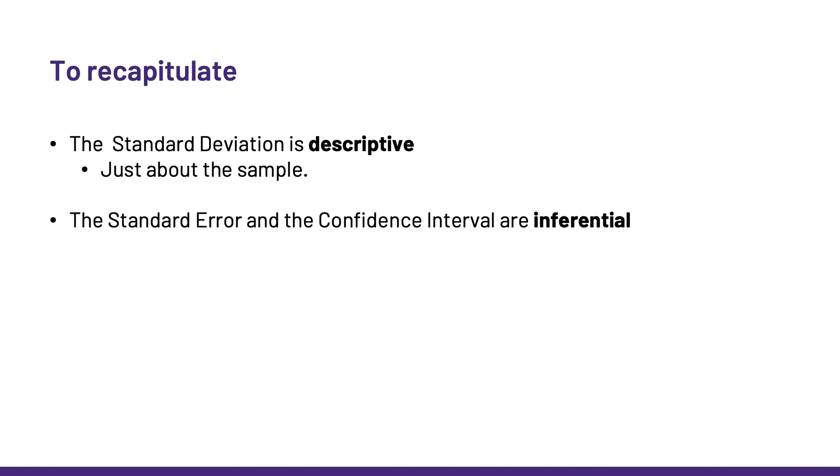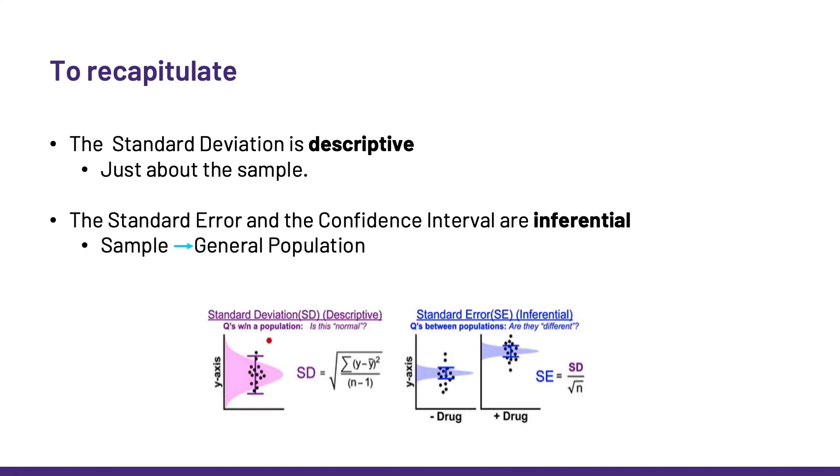So, to recapitulate, the standard deviation is said to be descriptive because it is about our sample and our sample only. Whereas the standard error and the confidence interval are said to be inferential because, by taking into account the sample size, they tell us how much we can infer from our sample to the general population or if we can identify differences between populations.